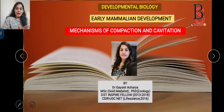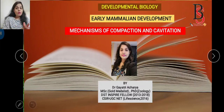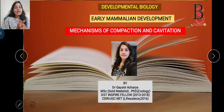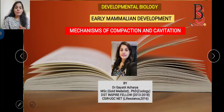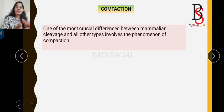Welcome back to Bio School. Have you ever wondered how early mammalian development differs from others? What is the mechanism of compaction? What are the factors responsible for the development of inner cell mass and the trophoblast? Watch this video till the end — at the end, I'm going to solve some previous year CSIR questions related to this topic.